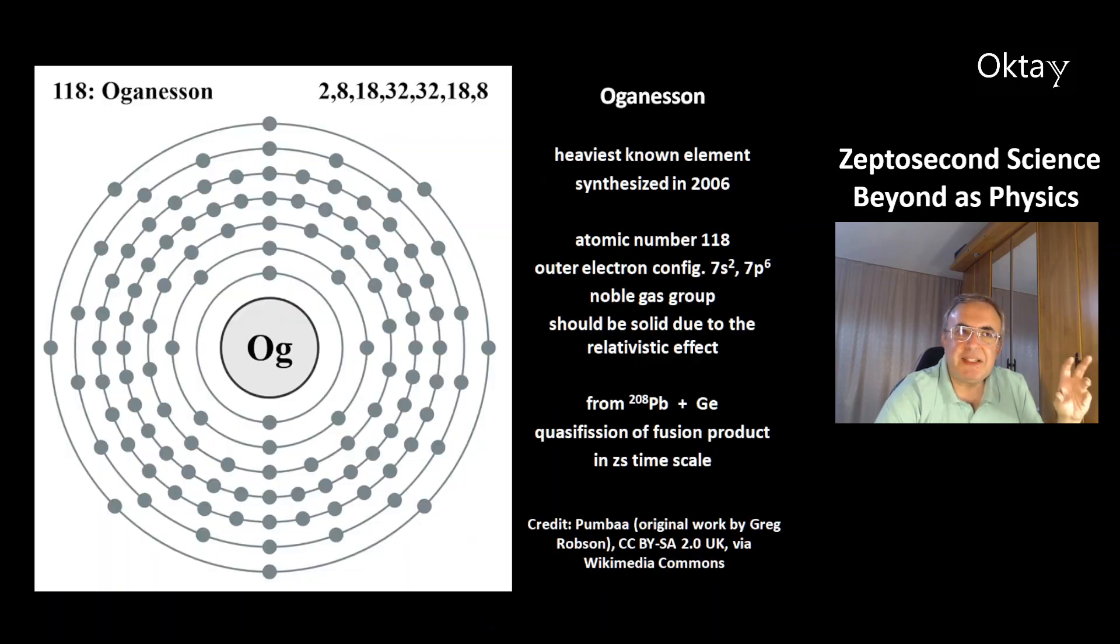This is the heaviest known element, oganesson. It was synthesized in 2006. It's an artificial element. It has atomic number 118. Outer electron is the seventh shell, 7s2, 7p6. So this makes it a member of the noble gas group. However, due to the relativistic effect, it is expected to be a solid.